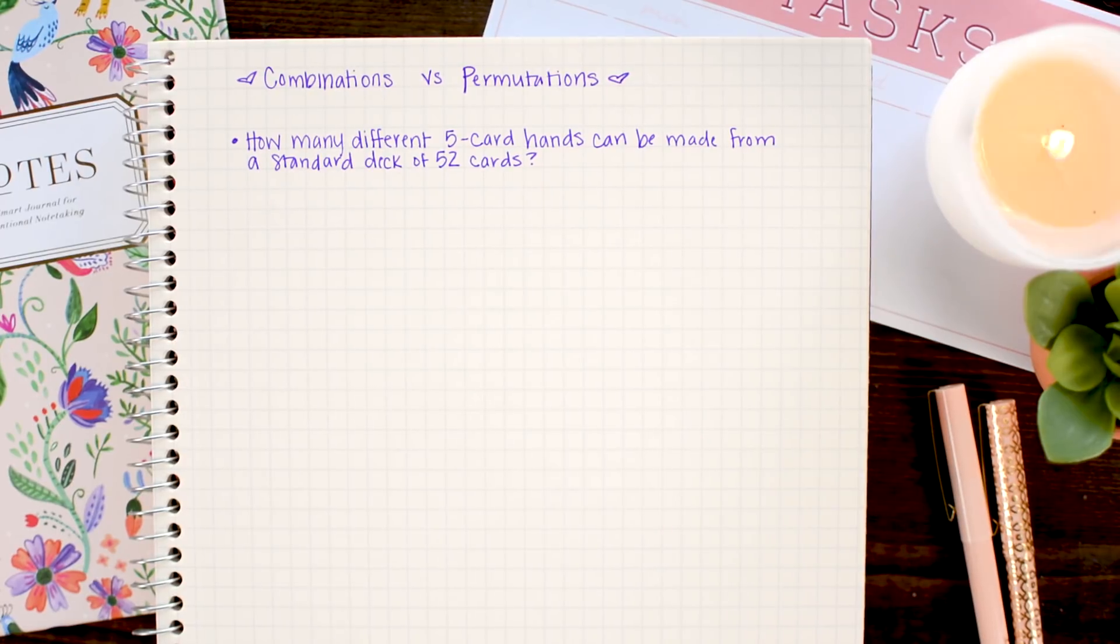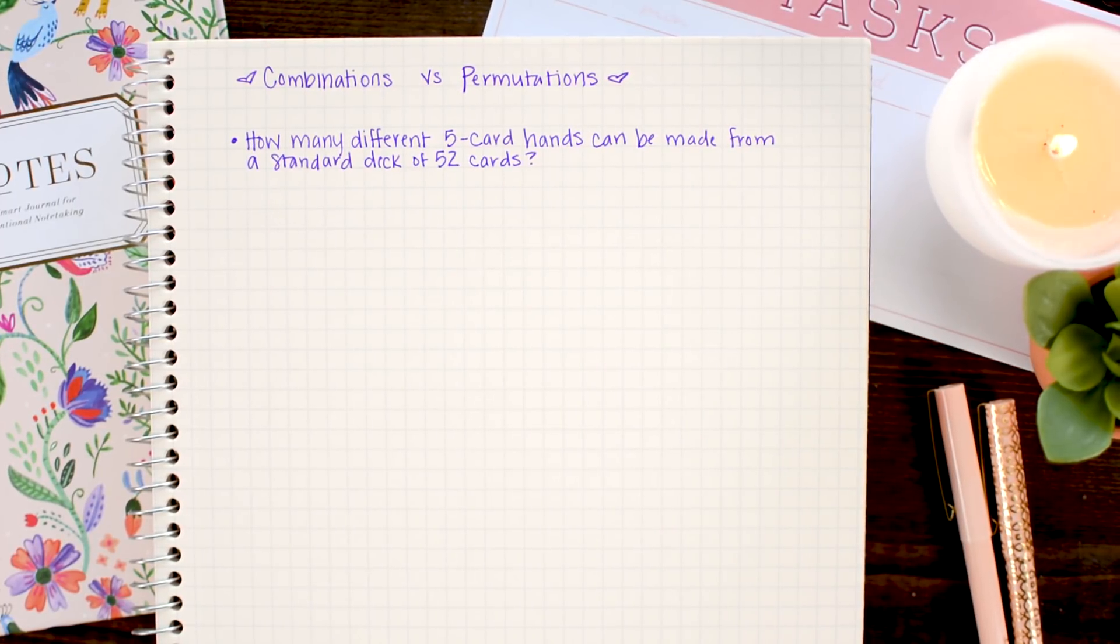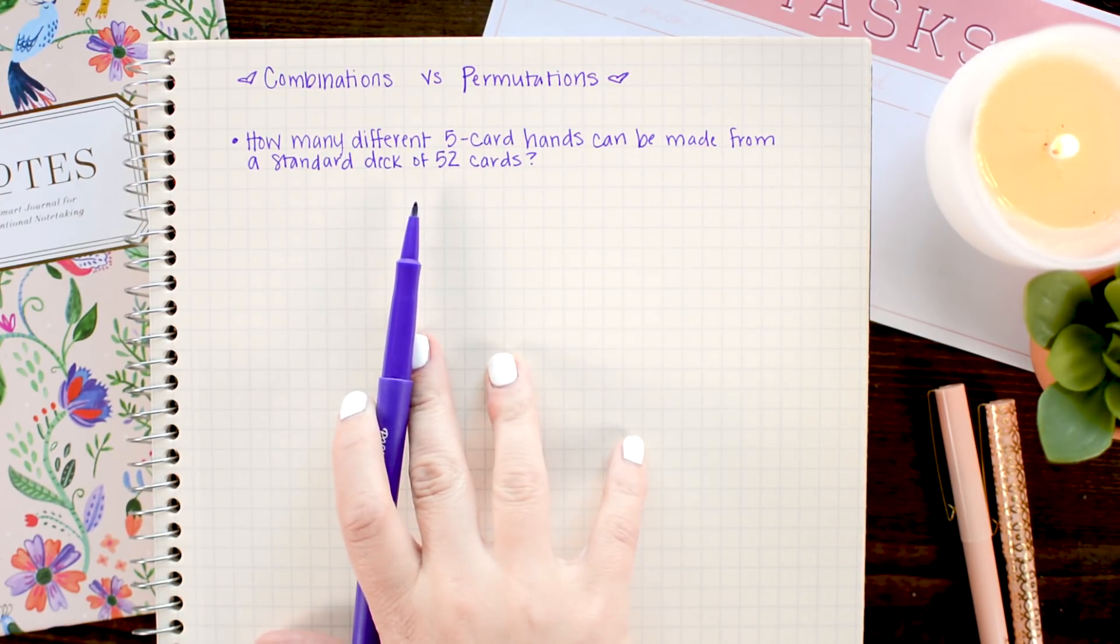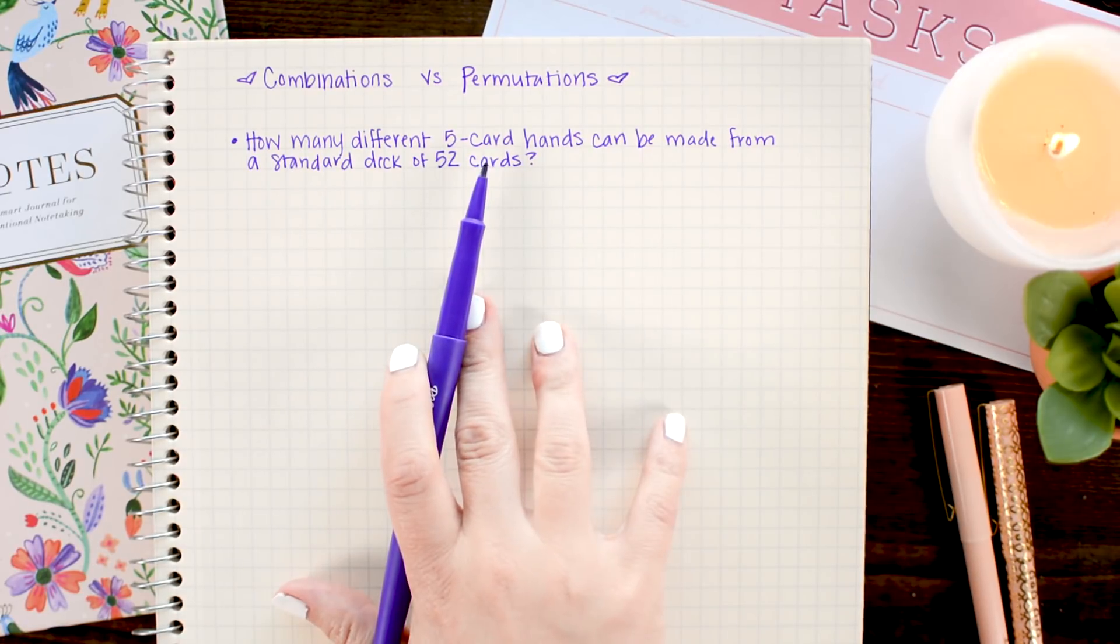The problem we're going to be looking at today is figuring out how many different 5 card hands can be made from a standard deck of 52 cards. Now, we could jump straight into the combinations and permutations formulas.